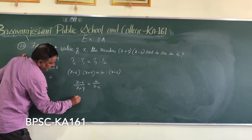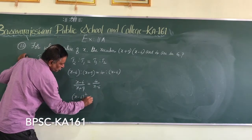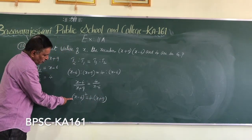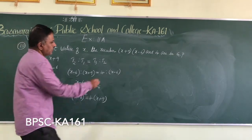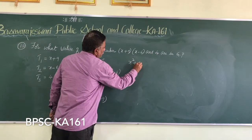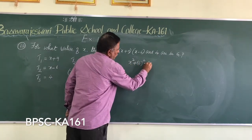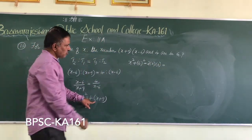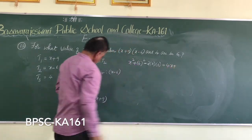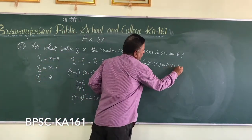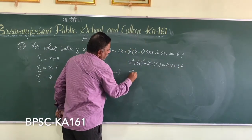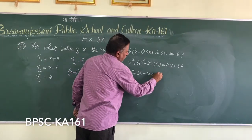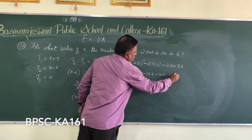Cross multiplying gives us X minus 6 whole square equals 4 times X plus 9. Expanding using the formula for (a minus b) whole square — a squared plus b squared minus 2ab — we get X squared plus 36 minus 12X equals 4X plus 36.